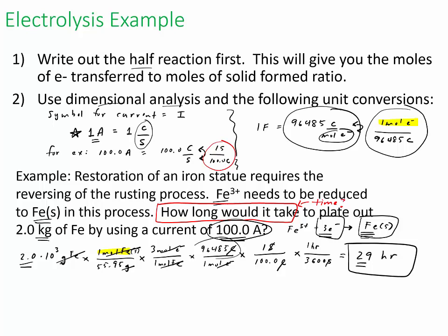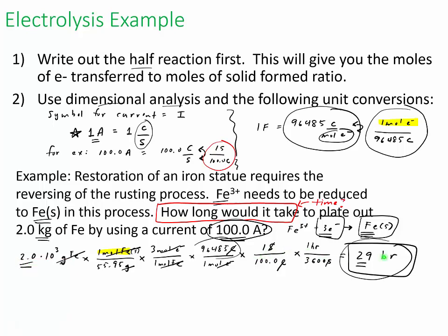Realize that current is actually a rate — it's how many coulombs per second. We can reduce the time if we increase the current. Literally thinking about it: if I apply more work in the form of current, I'll get it done faster. Mathematically, a bigger current number in the denominator gives a lower time value, so a stronger current reduces how long the process takes.